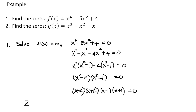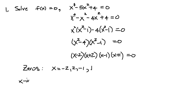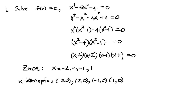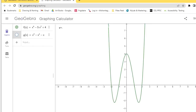So the zeros, or x-intercepts, are x equals negative 2, positive 2, negative 1, and positive 1. As points, those are negative 2 comma 0, positive 2 comma 0, negative 1 comma 0, and positive 1 comma 0. These are where the graph crosses the x-axis, and we can see all four intercepts on the graph.